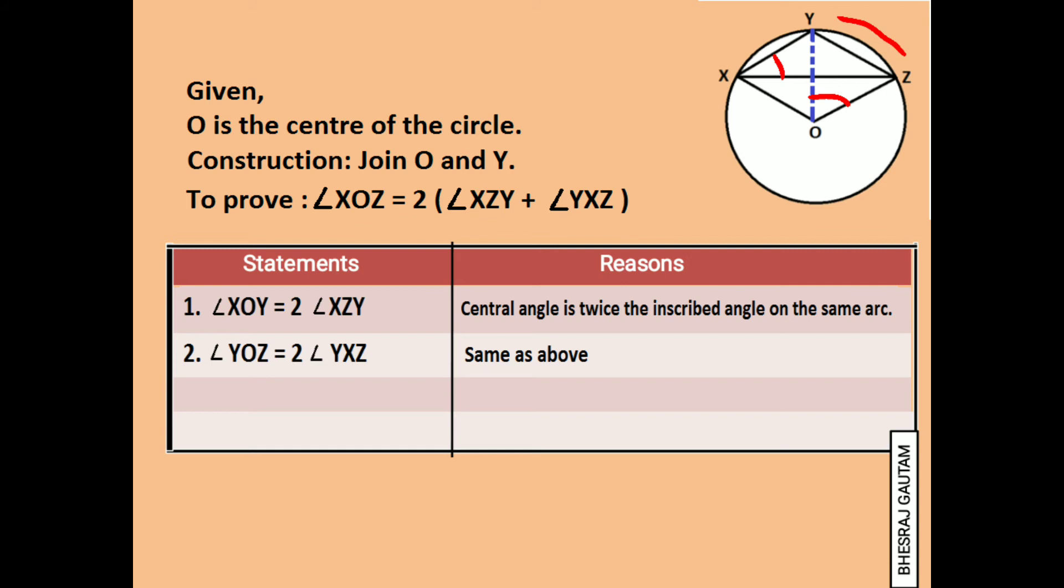Now following the simple rule of mathematics, we can write sum of left hand side is equal to the sum of right hand side, which is angle XOY plus angle YOZ equals two times the sum of angles XZY and YXZ, from statement 1 and 2.